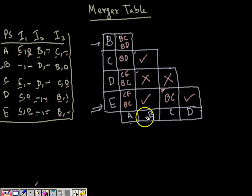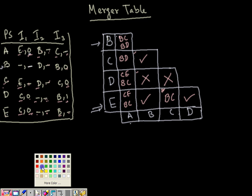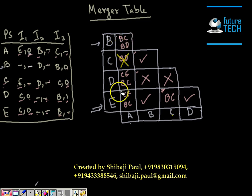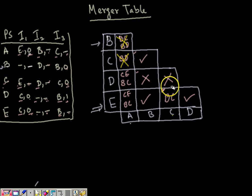Now we check whether all compatibility dependencies hold. B-D is not compatible. We used B-D as a dependency for A-B and A-C, so those must be eliminated. A-C is not compatible since B-D is not compatible. A-B is also not compatible since B-D is not compatible. C-D is not compatible — we check if C-D was used as a dependency anywhere; it was not. Had it been used, those pairs would also need to be crossed out.